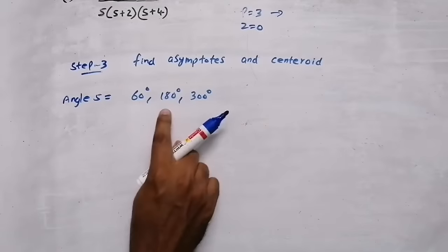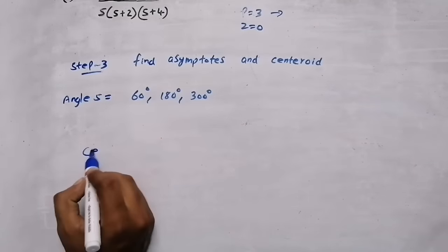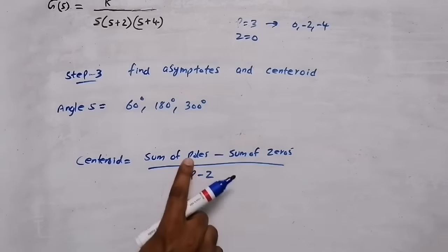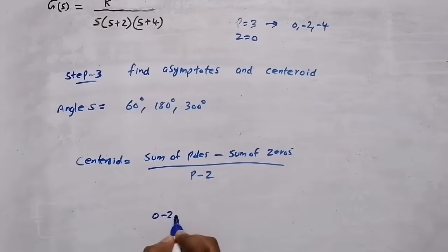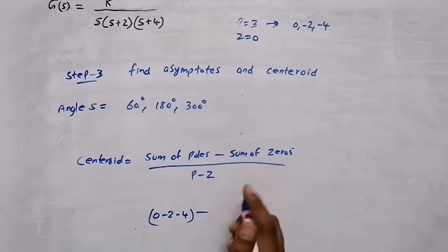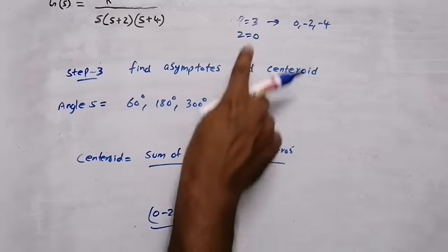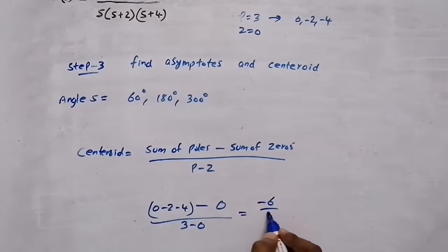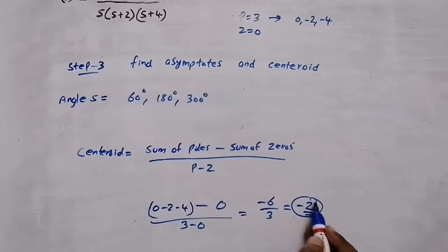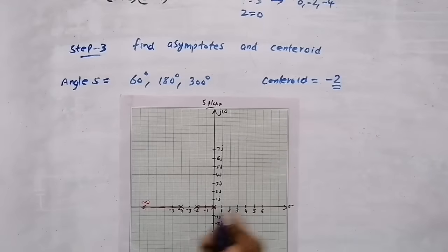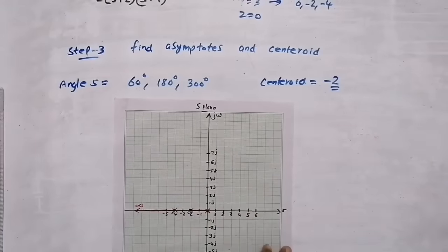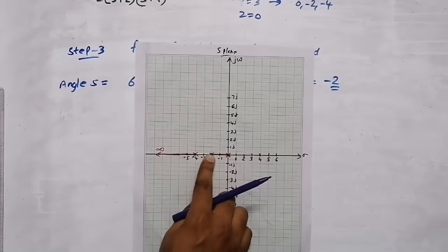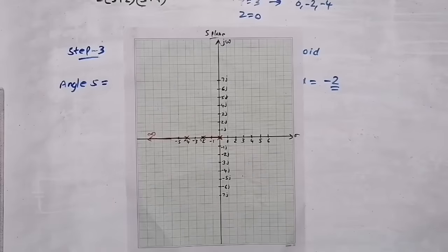Now we need the centroid — the point from which these asymptotes originate. The centroid formula is: (sum of poles − sum of zeros) / (P−Z). The poles are 0, -2, and -4, so their sum is -6. There are no zeros. Dividing: -6/3 = -2. So the centroid is at -2. From the centroid at -2, we plot asymptotes at 60°, 180°, and 300° using a protractor.